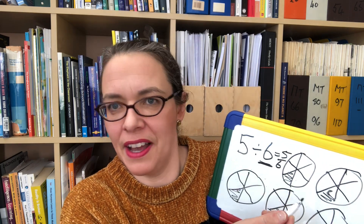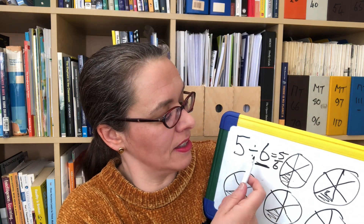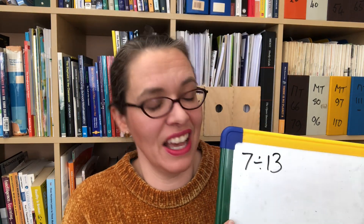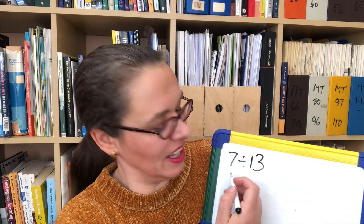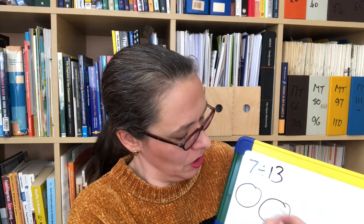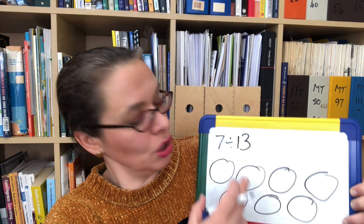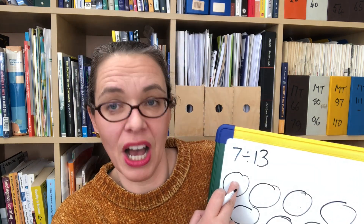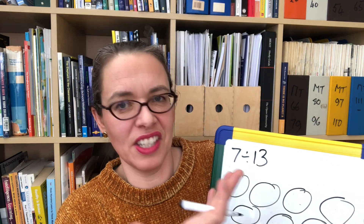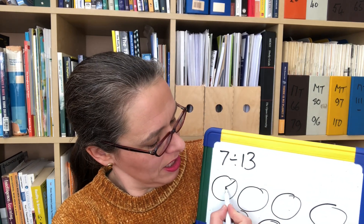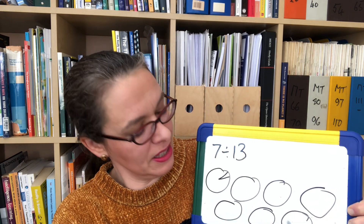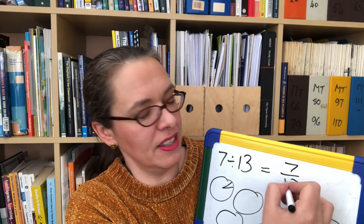Five divided by six is five sixths — or you can read it the other way: five sixths is five divided by six. You want to continue working on questions like this until you get to tricky ones like seven divided by 13. Seven pizzas, and you quickly see you want to divide every pizza into 13 parts. Each of those 13 people can come round and take one thirteenth from each pizza and therefore they get seven thirteenths of a pizza.